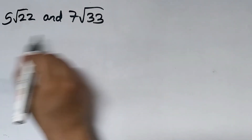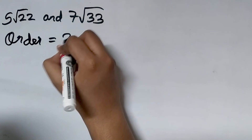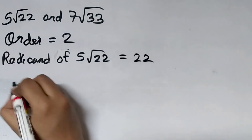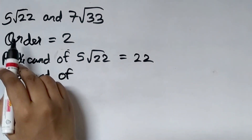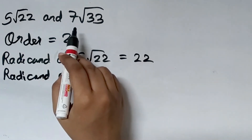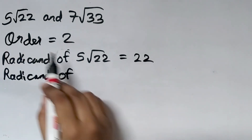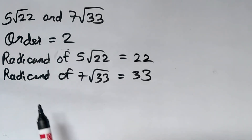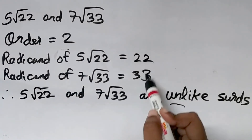Next: 5 root 22 and 7 root 33. The order of both surds is 2, which is the same. But the radicand — here it is 22 and here it is 33. We cannot simplify either of these surds further; both are already in simplest form. So the radicand of 5 root 22 is 22 and the radicand of 7 root 33 is 33 — the radicand is not the same. Therefore these two surds are unlike surds, because the radicand is different.